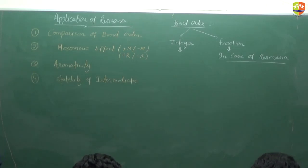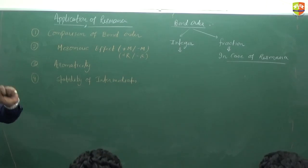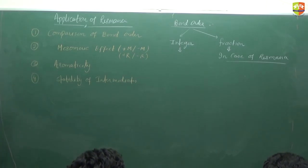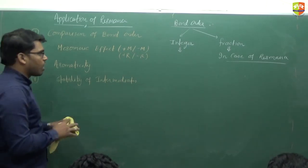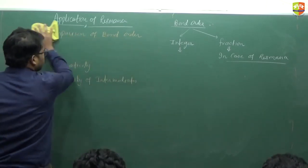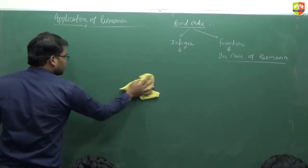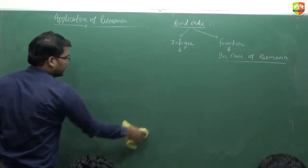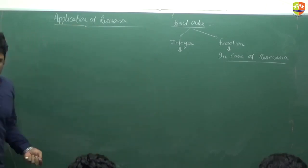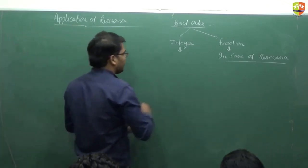For example, in CH₃-CH₂-CH₃, all the carbon-carbon bonds have bond order 1 because there is no resonance. When there is no resonance, we have the integral value. Otherwise, we will have the fractional value.